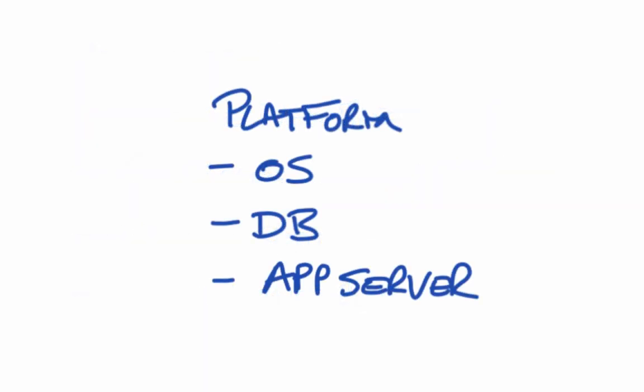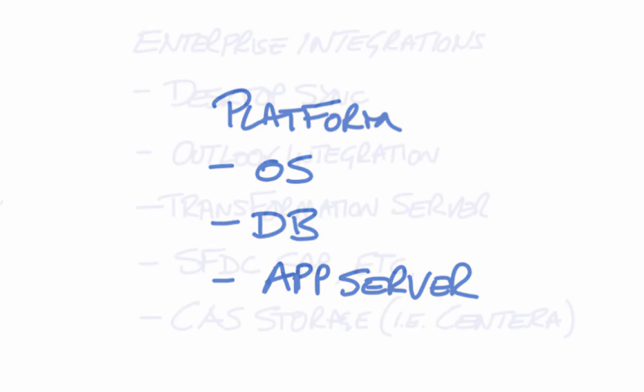There is also a difference at the platform layer. Alfresco Community Edition is designed to work on an open source stack — open source operating systems, open source databases, and open source app servers. Whereas Alfresco One is designed to work on both an open source stack plus commercial software. For example, if I wanted to use Oracle as my database layer, then I really need to be looking at Alfresco One.